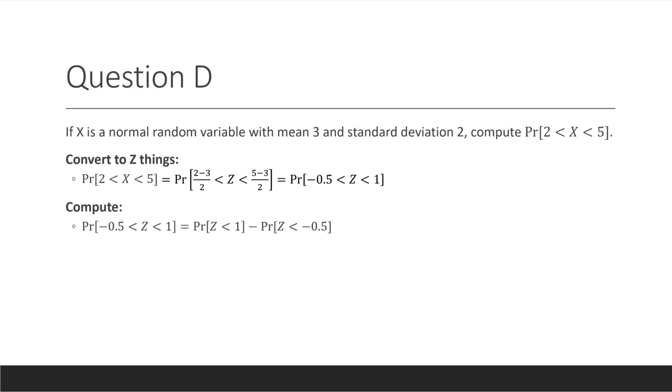Well, the probability that negative 0.5 is less than z is less than 1, is the probability that z is less than 1, minus the probability that z is less than minus 0.5.